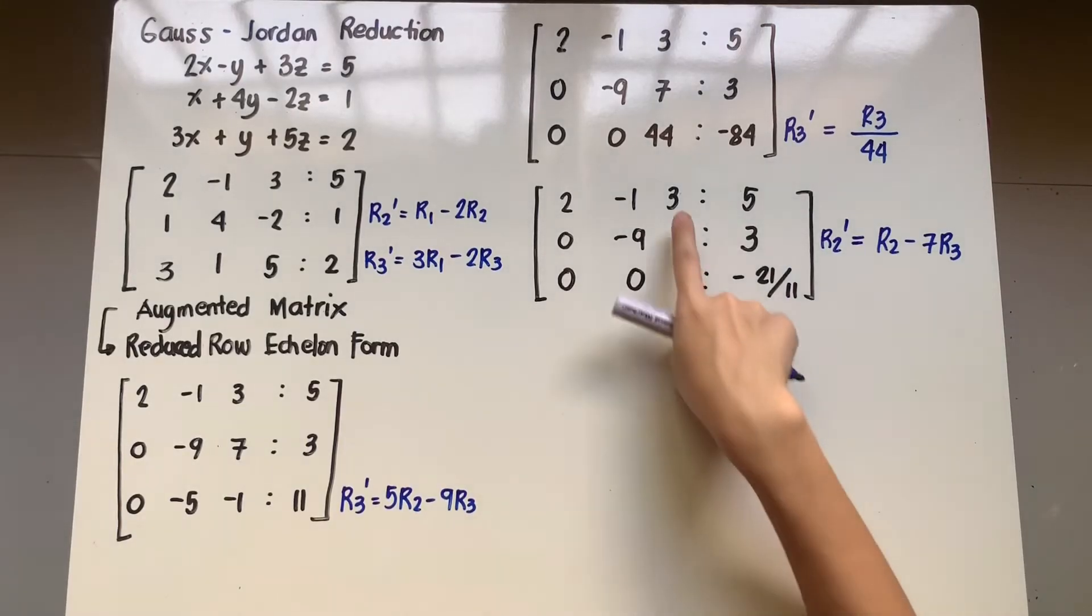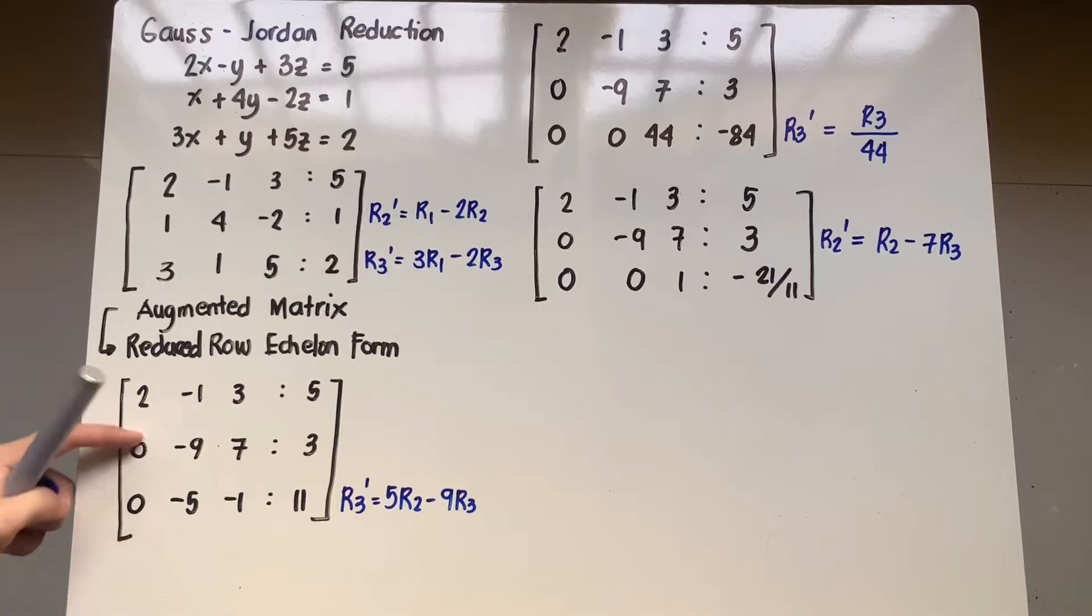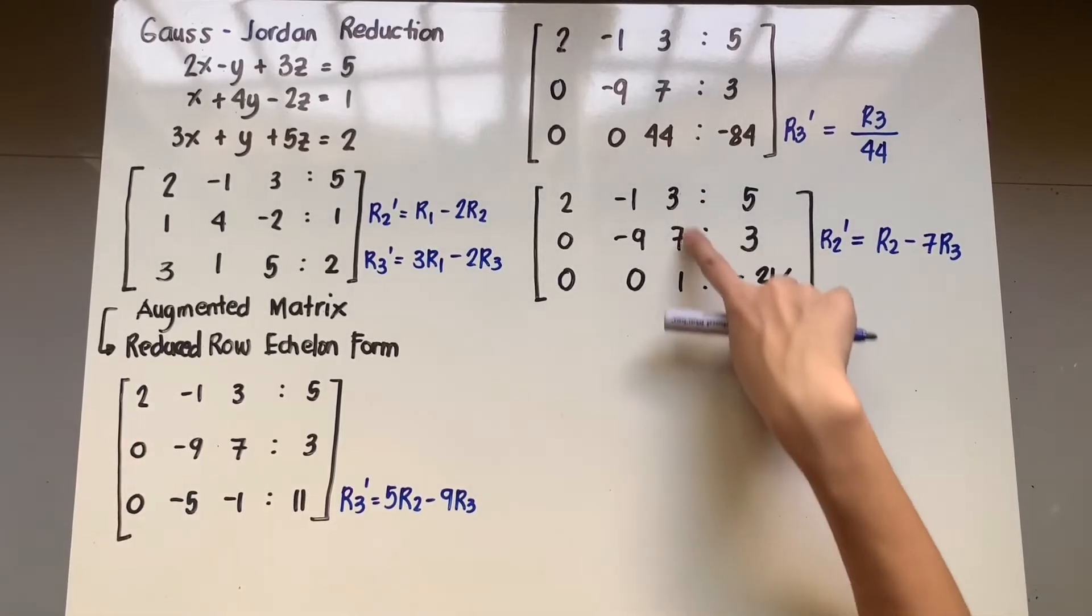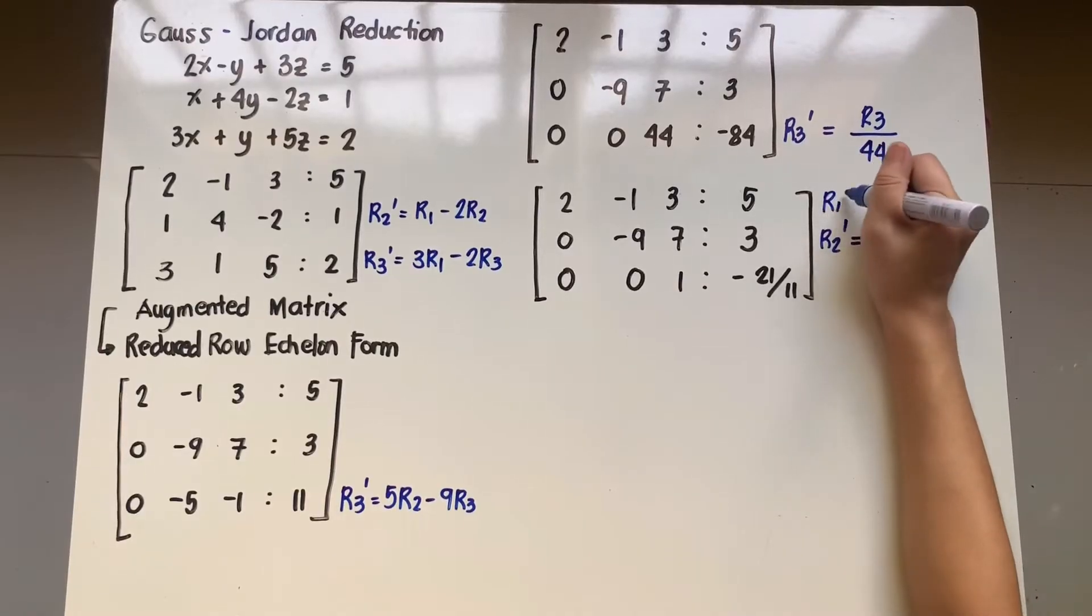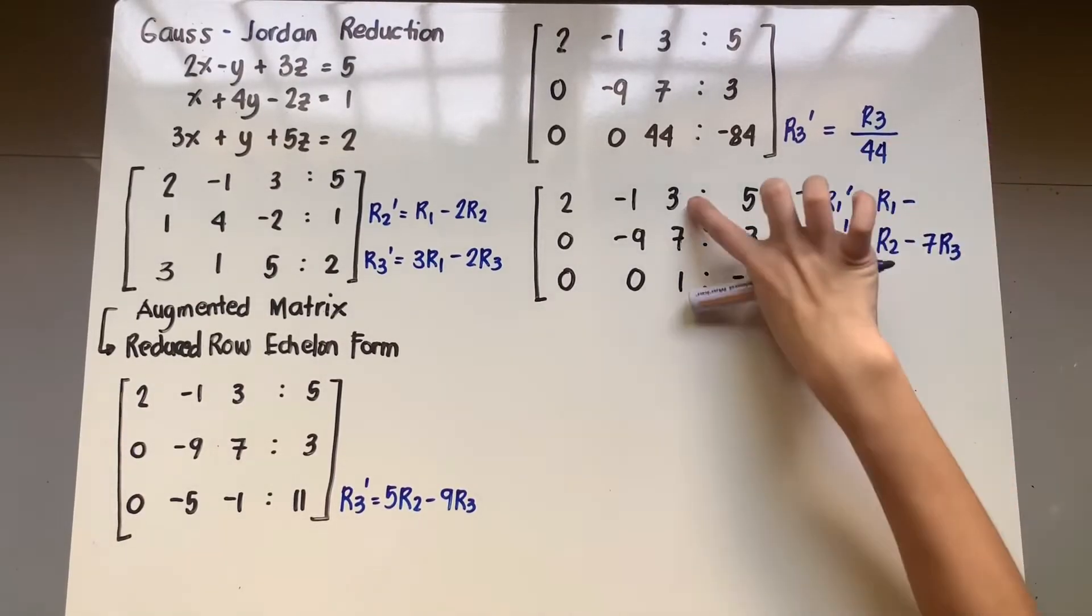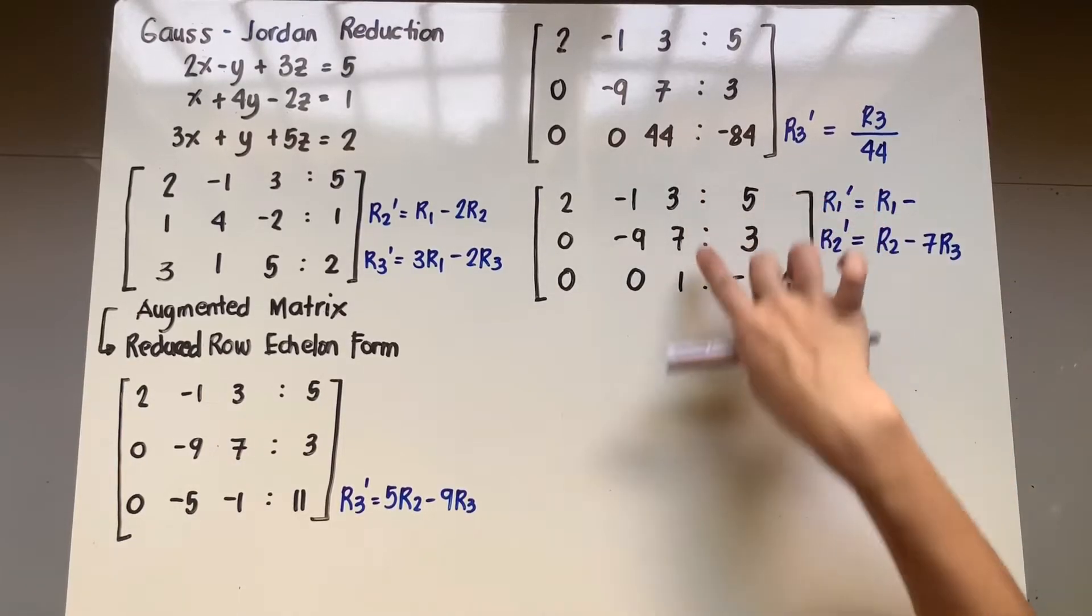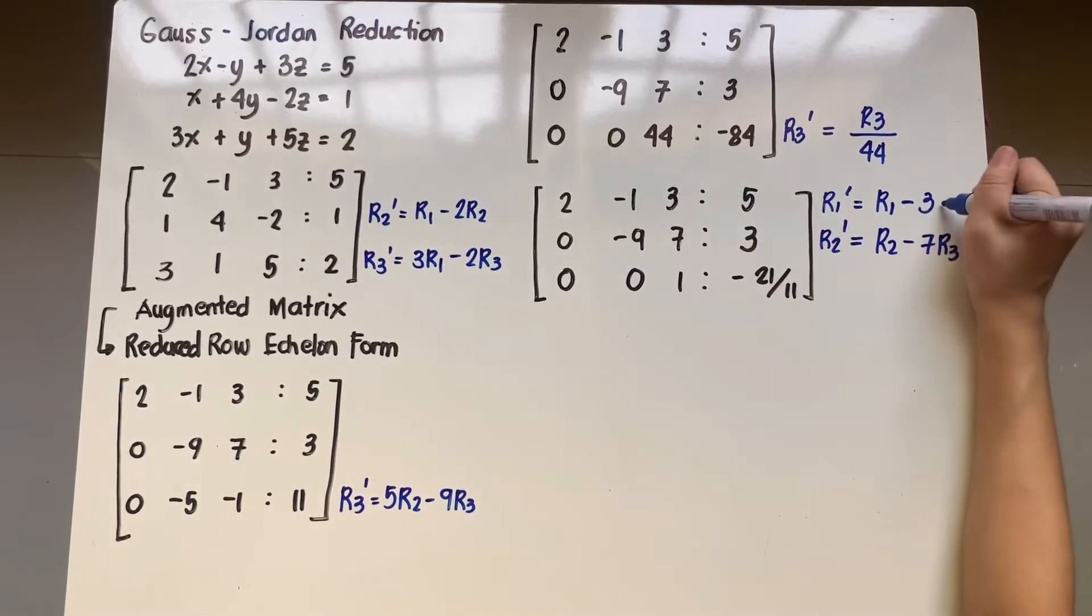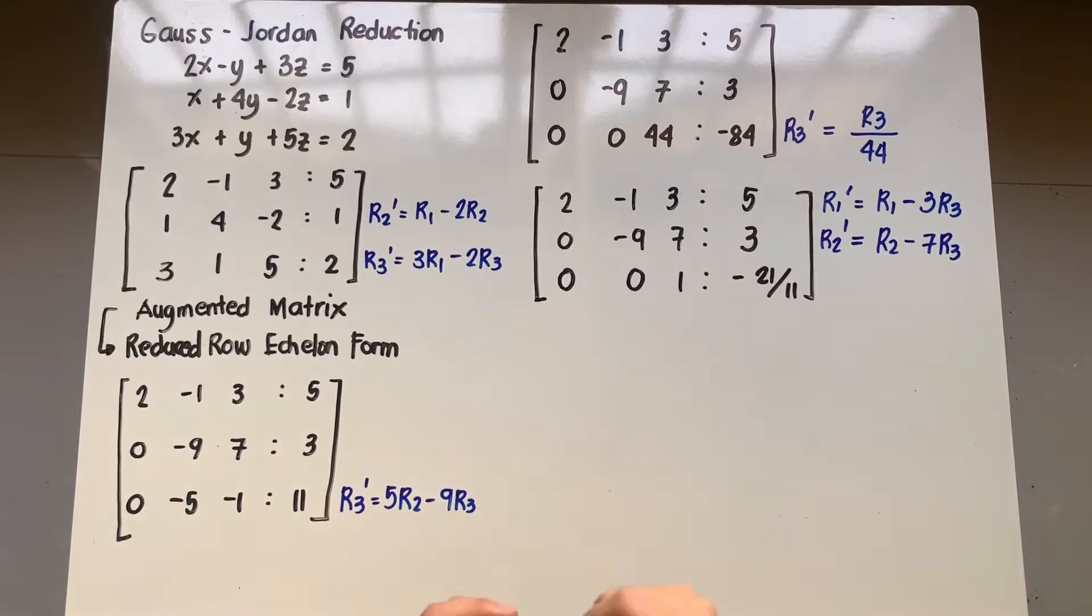In the same manner, pwede ko na rin palitan to. My target here is 3. Parang yung ginawa natin dito. By columns muna tayo. So third column muna tayo. I can replace the first row. I'll get R1 prime. That would be R1 minus times 3 ko ngayon, diba? So I'll multiply this by 3. R3. I'll apply the formula.